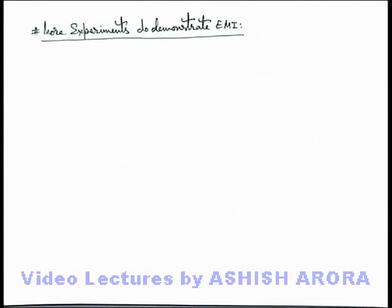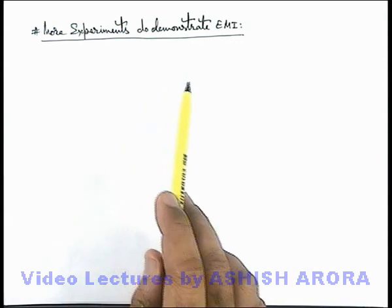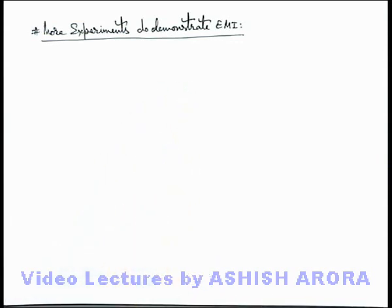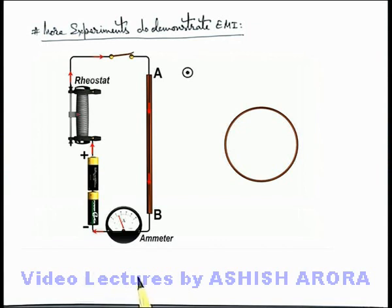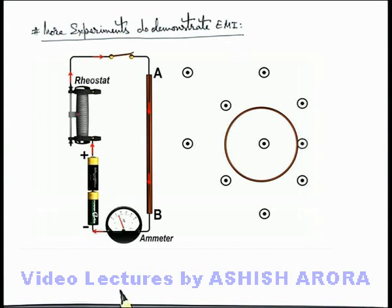Let us discuss some more experiments to demonstrate electromagnetic induction and the direction of induced current using Lenz's law. Here we can see an electrical circuit in which a wire A-B is connected with a battery, a rheostat, and a switch. On the other side of wire A-B there is a circular coil placed in the same plane. When the switch is closed, a clockwise current flows in the loop of wire A-B, which establishes a magnetic induction in the outward direction in the region of the loop. As the outward magnetic induction increases due to the current, it affects the circular coil.